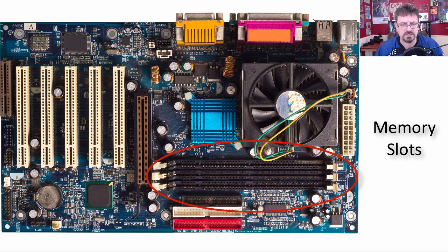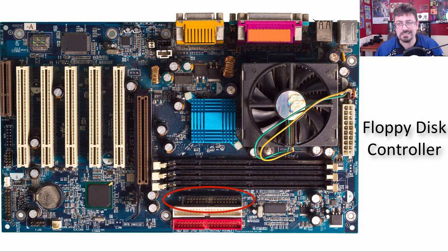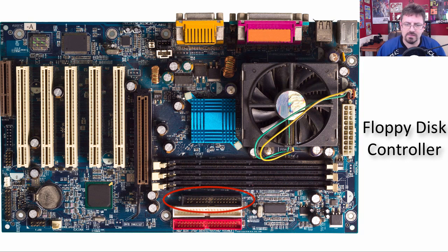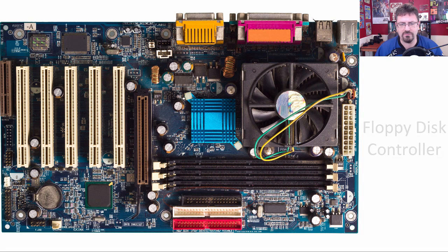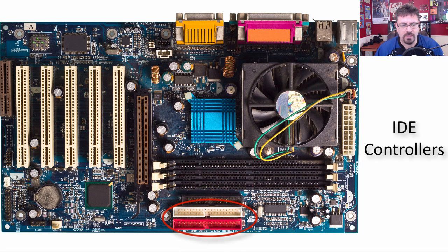Over here are memory slots. Going down, we have the floppy disk controller — back in the day, we had floppy disks, and you would connect an IDE cable to this to connect to the floppy drive. A little further down, you had your hard drive connections and your optical drive connections. This was the IDE controller — the connection to those devices, whether two hard drives or whatever you needed.